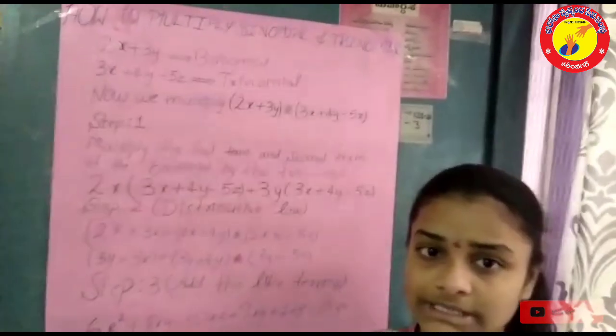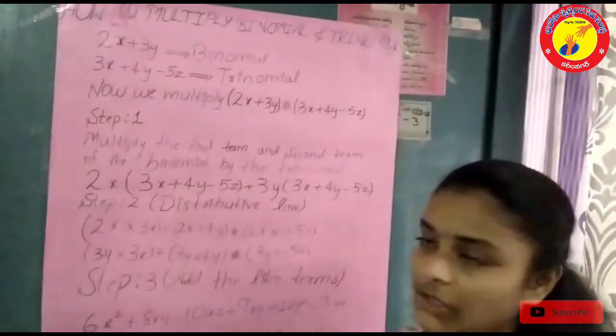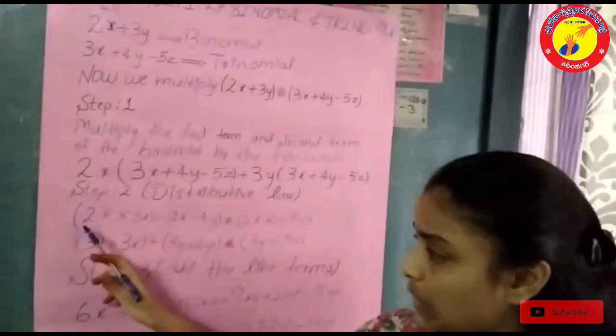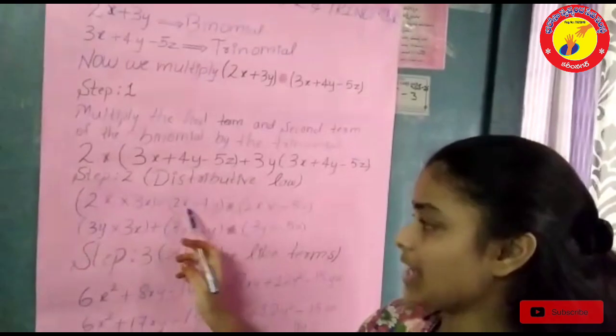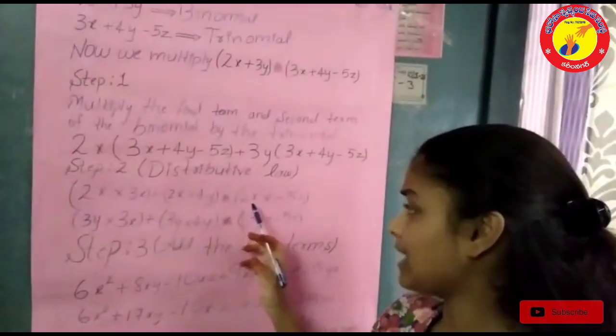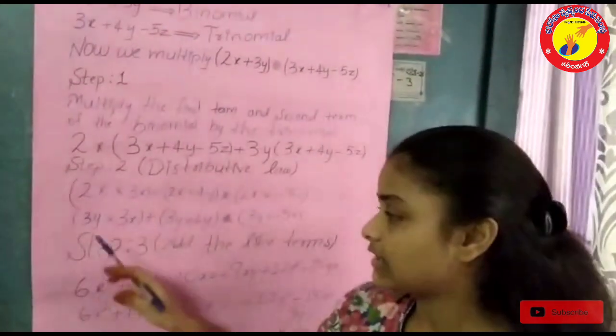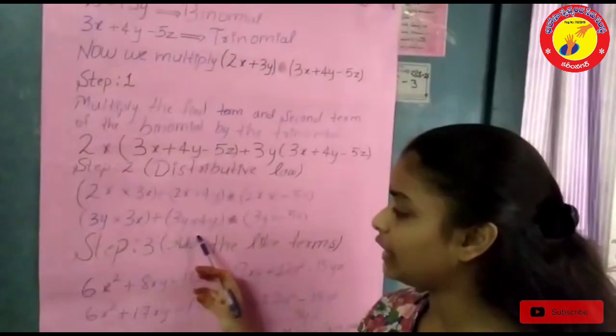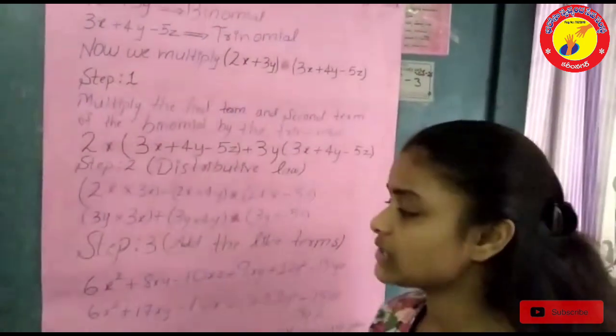Step 2 is distributive law. In step 2 we have to use distributive law. 2x into 3x plus 2x into 4y plus 2x into minus 5z, and 3y into 3x plus 3y into 4y plus 3y into minus 5z.